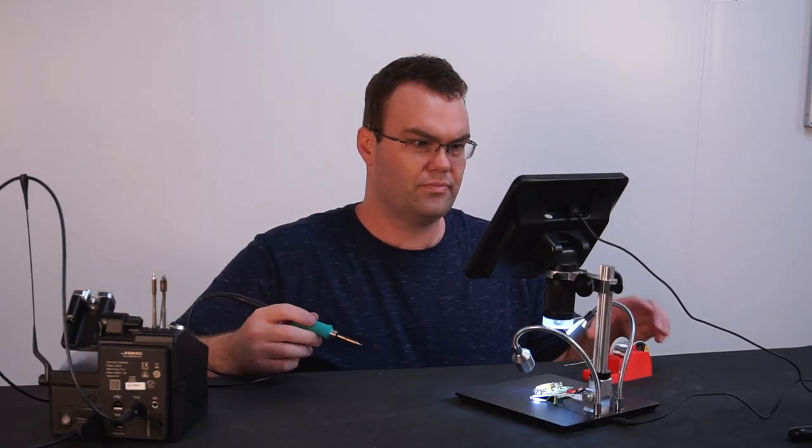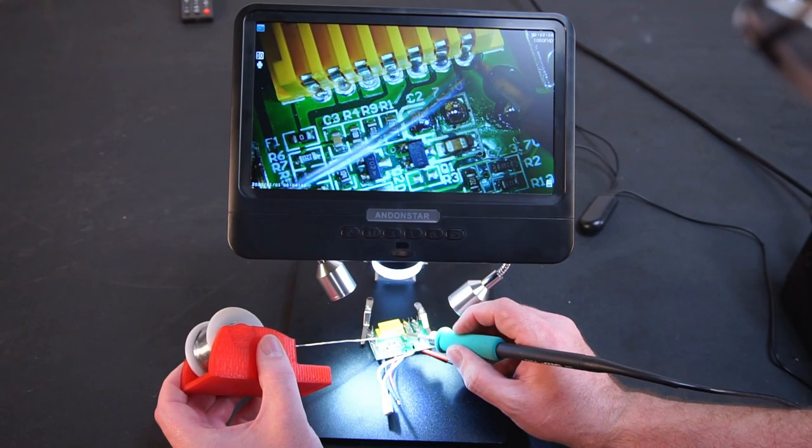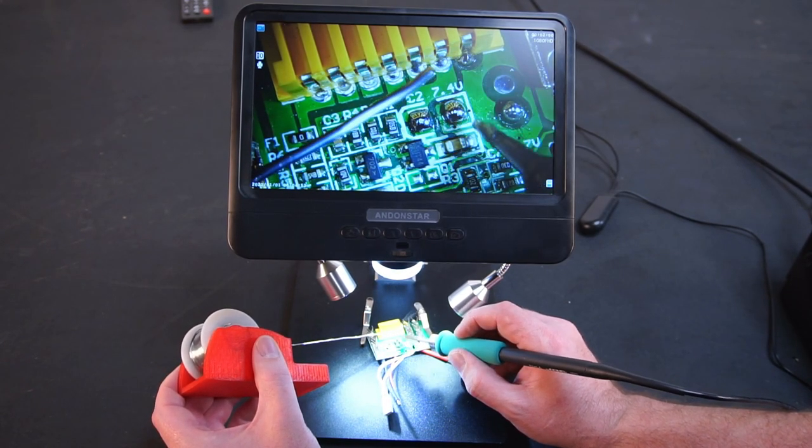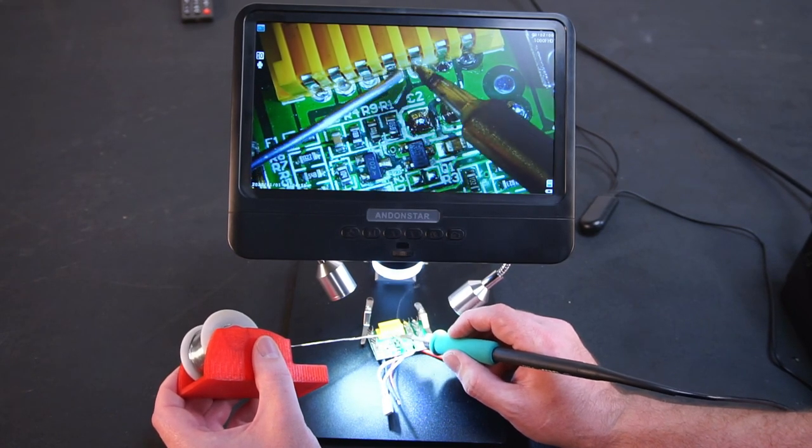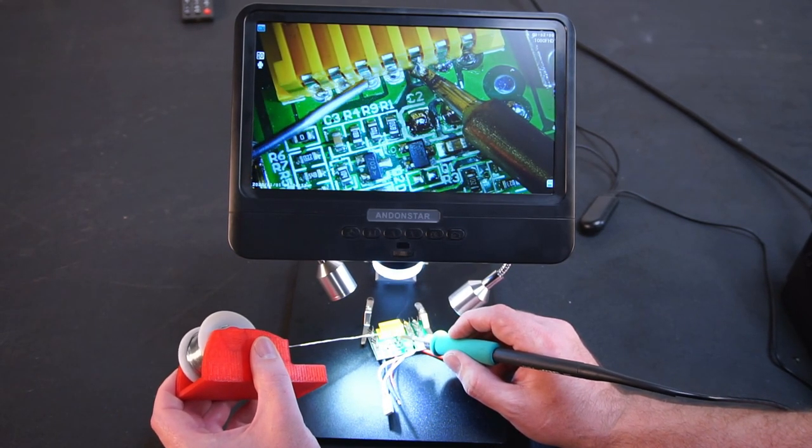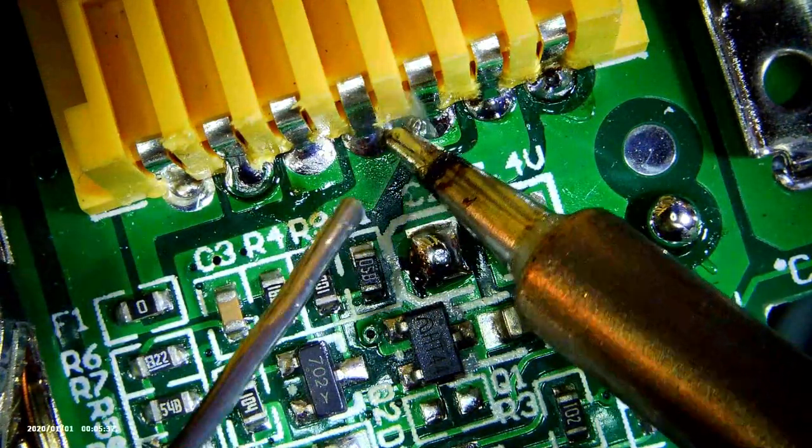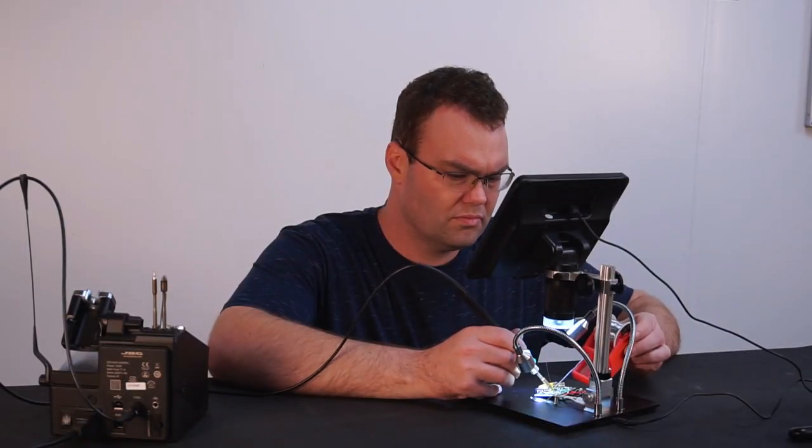However I can forgive these issues because considering the price you're actually getting quite a lot for your money. At the time of filming this scope is available for around 100 bucks. We're talking about a 260x magnification scope with a large 8.5 inch display which is great for circuit board work or any other up close work. Making this a great entry level scope which I highly recommend.